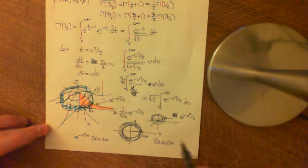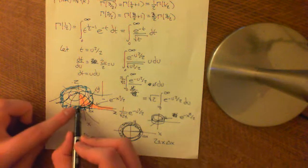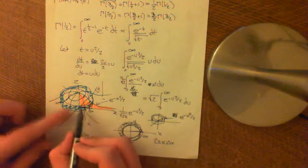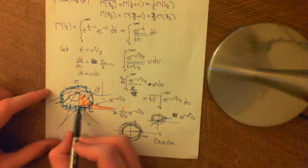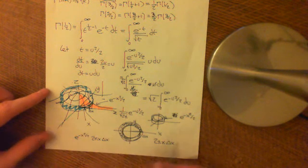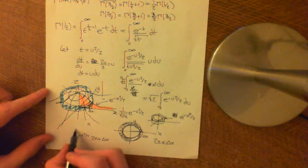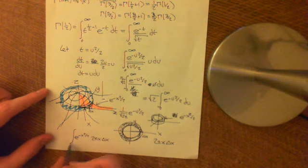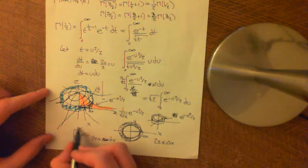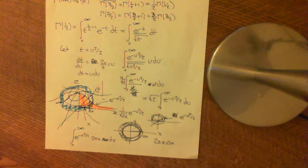We add all of that up from 0 to infinity — getting all the annuli of every possible radius. Letting delta x converge to 0 and integrating from 0 to infinity gives us the total volume. That's not a rigorous argument, but it's an intuitive argument for what we're doing — in the spirit of applied maths.